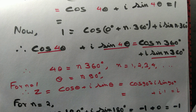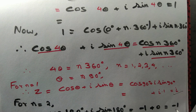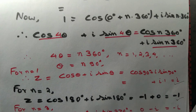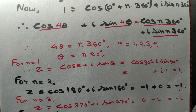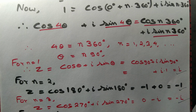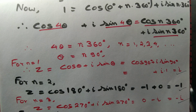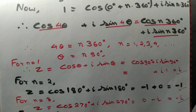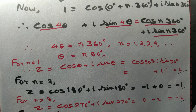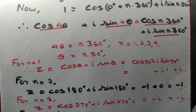So the four fourth roots of unity are: i, −1, −i, and 1. These are all four fourth roots of unity, which we have computed using De Moivre's theorem.